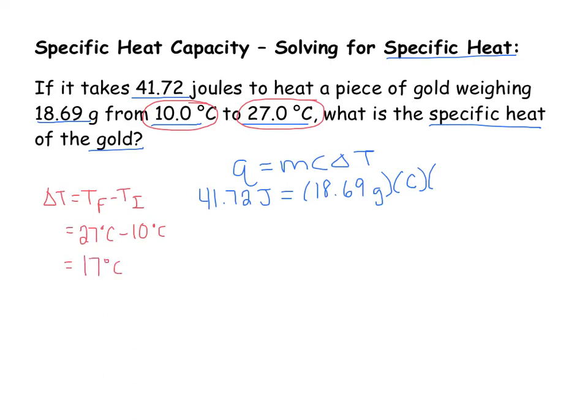So we'll plug that into our formula, 17 degrees Celsius. The next thing I would suggest is multiplying 18.69 times 17, and that will give us 317.73 times C.